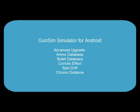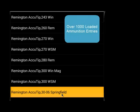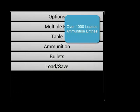Hi, this is Frank from GunSim.com about the Advanced In-App Purchase Upgrade for the Android GunSim Simulator. The Advanced Upgrade has a built-in library of over 2,000 bullets and over 1,000 kinds of loaded ammo.